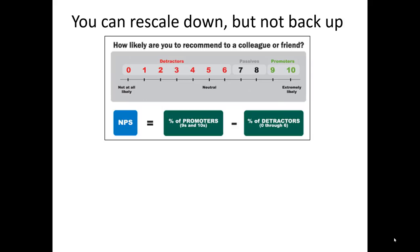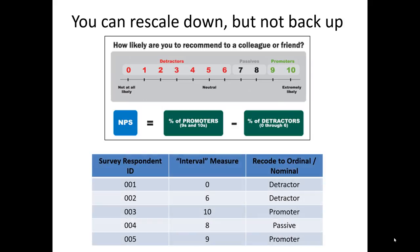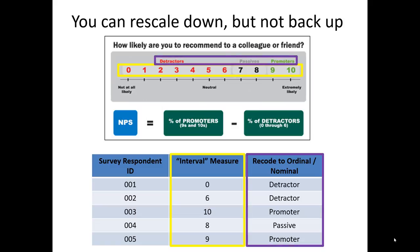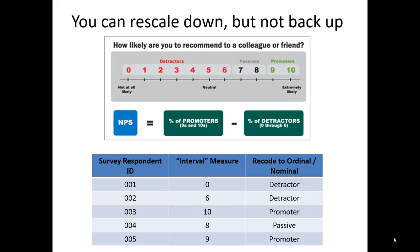Let's take a look at the Net Promoter Score Scale question again. We already learned how we handle the coding here. After people respond from 0 to 10, we then recode people into detractors, passive, or promoters. In other words, we collect interval-level data — say five people scored 0, 6, 10, 8, and 9 — but for purposes of the Net Promoter Score Scale, we don't actually use this interval-level data. Instead, we recode it into nominal-level data: detractors, promoters, and passives — just buckets of individuals. And then we use our calculations.